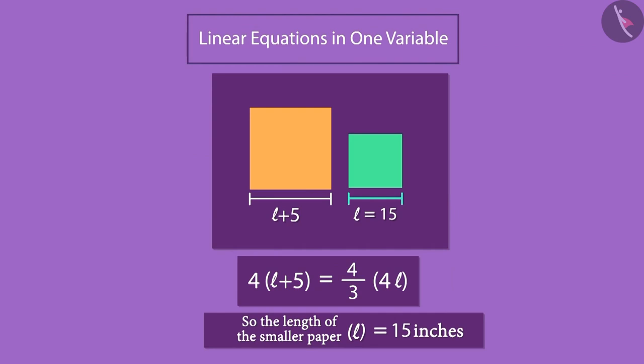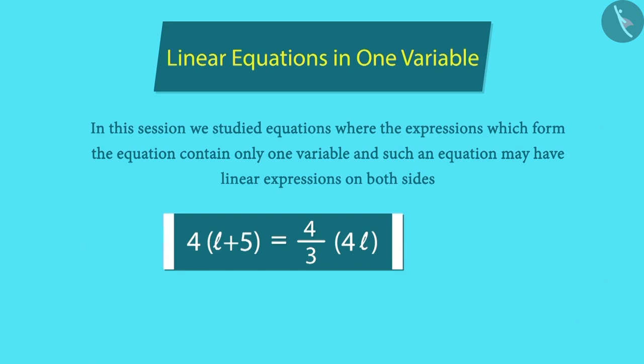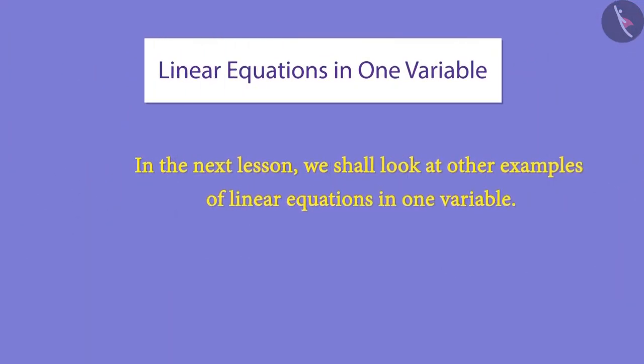We shall end this session here. We learned that linear equations with one variable can be solved even when the variable exists on both sides. In the next lesson, we shall see other examples of linear equations.